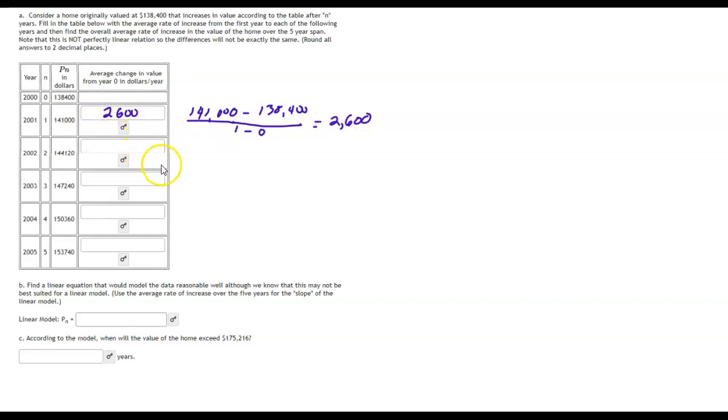So now we're going to do the same thing for the next value. But this is supposed to be from the first year. So it goes from here all the way to here. So that's our rise. It's going to be from $138,400 to $144,120. And so we'll do that.